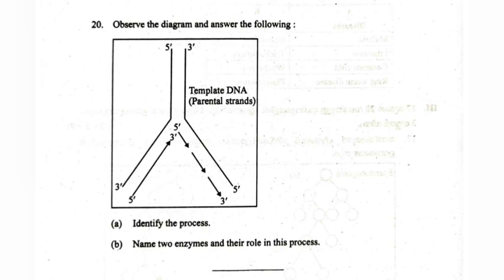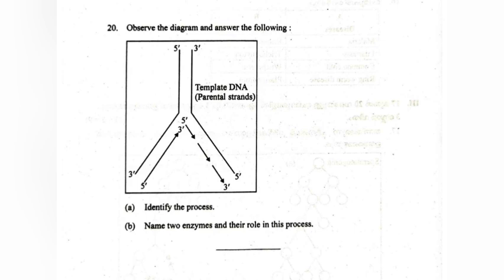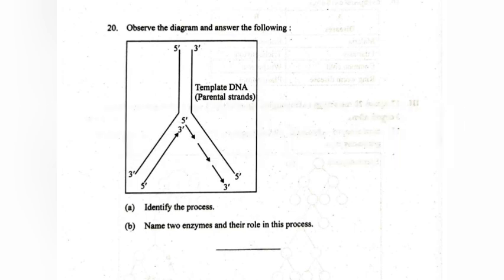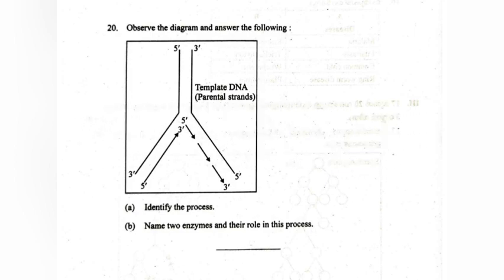20. Observe the diagram and answer the following. Identify the process. Answer: DNA replication. Name two enzymes and their role in this process. Answer: 1. DNA-dependent DNA polymerase — catalyzes the polymerization of deoxyribonucleotides in the 5' to 3' direction only. 2. DNA ligase — joins DNA fragments together to form a new strand.